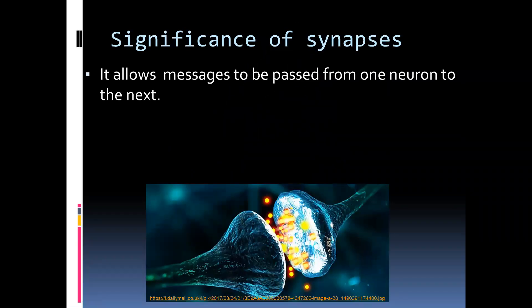Synapses are microscopic gaps where two neurons meet. You'll get a synapse between a sensory neuron and an interneuron, and again another one between the interneuron and a motor neuron. The most obvious function of the synapse is that it allows the message to pass from one neuron to the next.